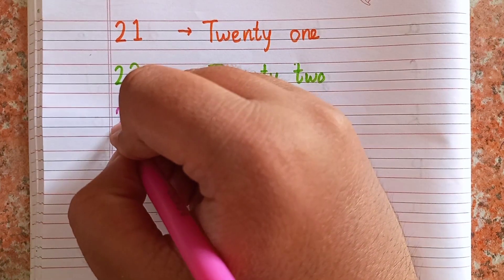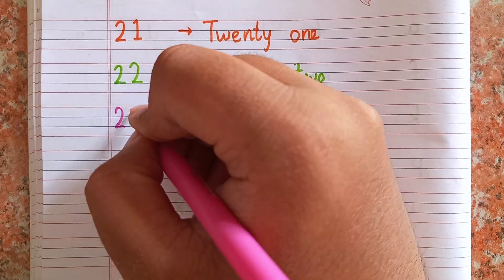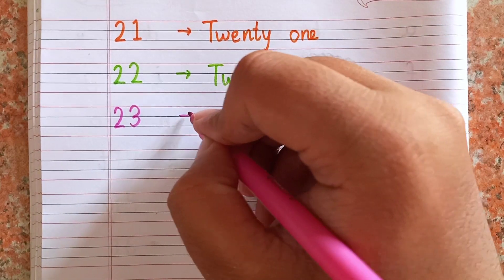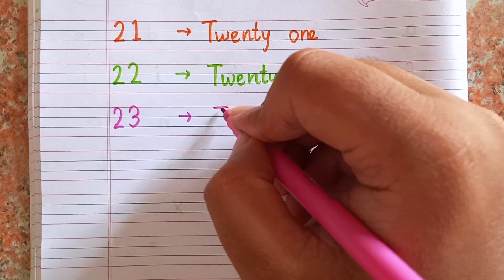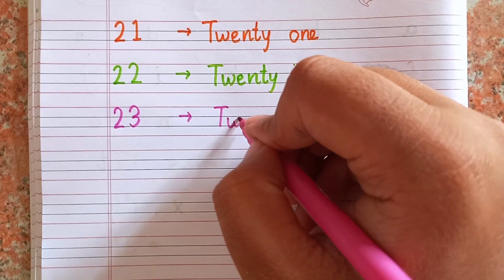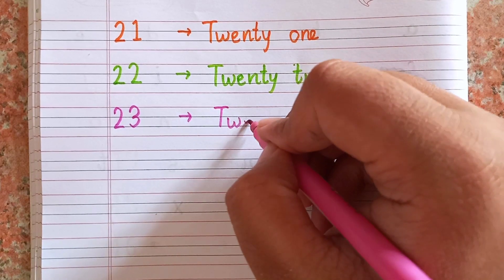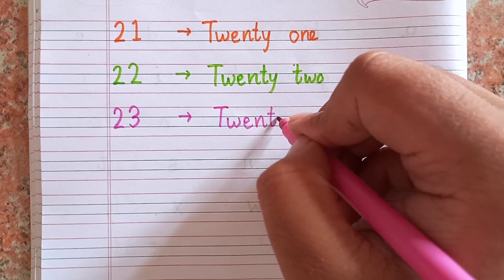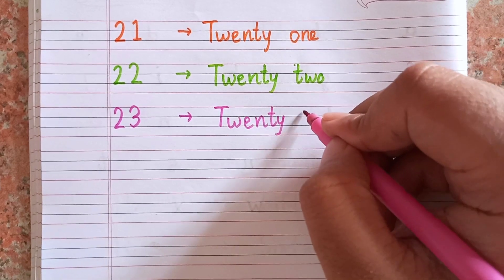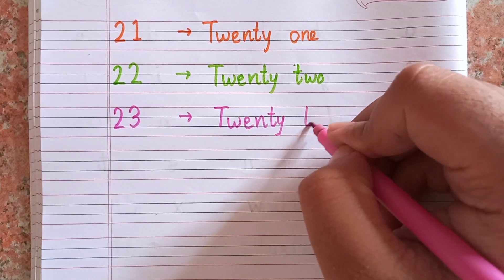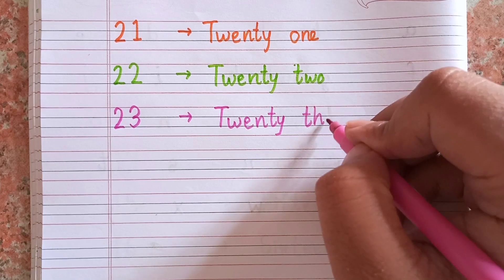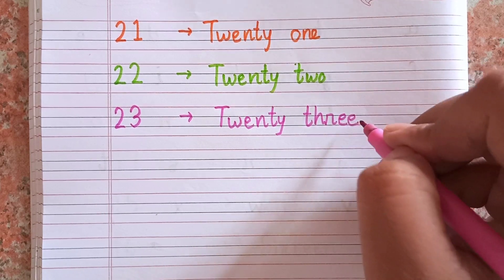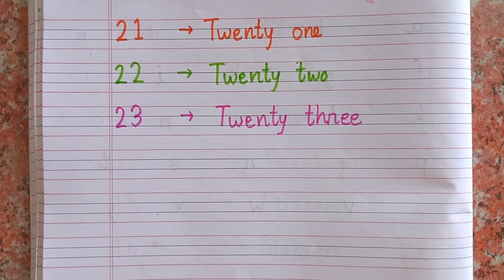After twenty-two, the next number is twenty-three — 2-3. The spelling of twenty-three is T-W-E-N-T-Y T-H-R-E-E. 23.